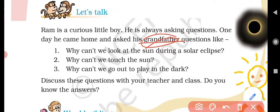Why can't we look at the sun during a solar eclipse? We can't look at the sun during solar eclipse because it hides itself behind the moon. Then Sun, Moon and Earth are in one line.